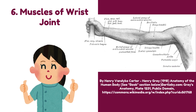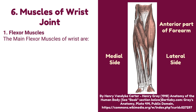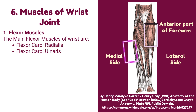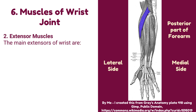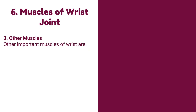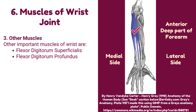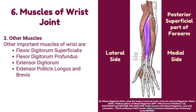Number 6: Muscles of the wrist joint. The main flexor muscles of the wrist are: flexor carpi radialis, flexor carpi ulnaris, and palmaris longus. The main extensor muscles of the wrist are: extensor carpi radialis longus, extensor carpi radialis brevis, and extensor carpi ulnaris. Other important muscles of the wrist are: flexor digitorum superficialis, flexor digitorum profundus, extensor digitorum, extensor pollicis longus and brevis, and abductor pollicis longus.